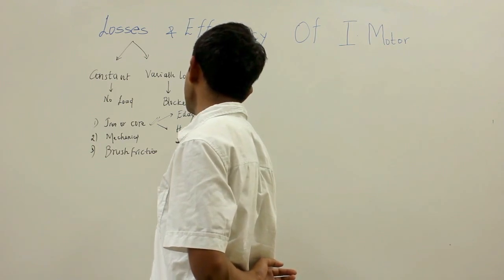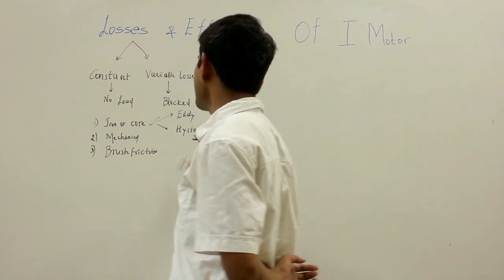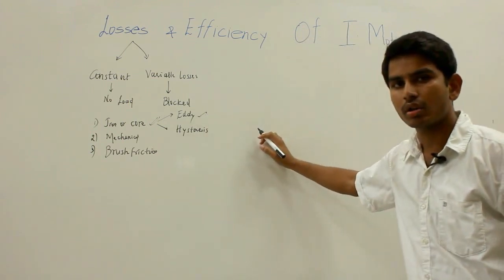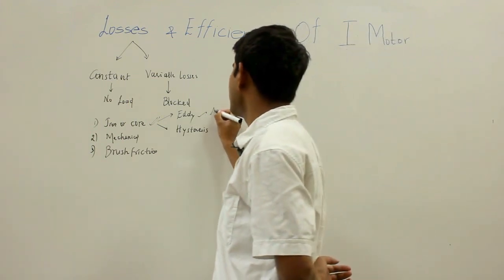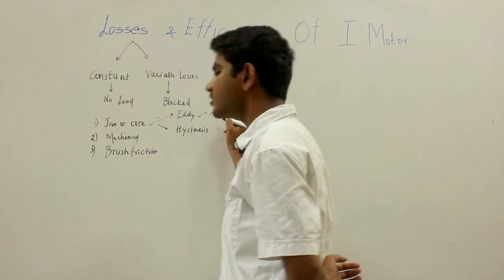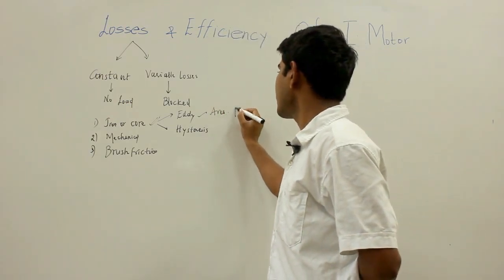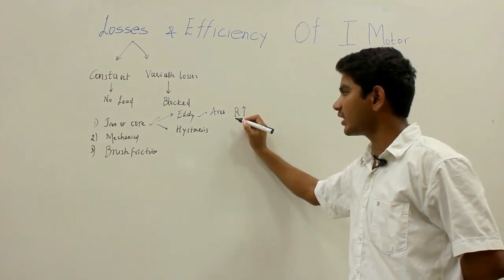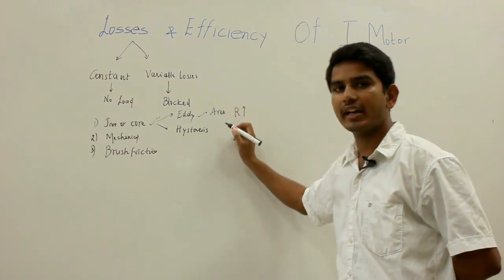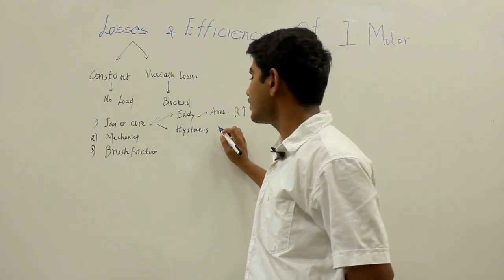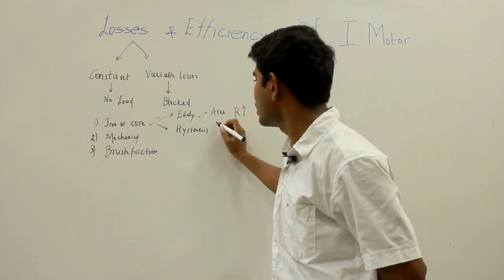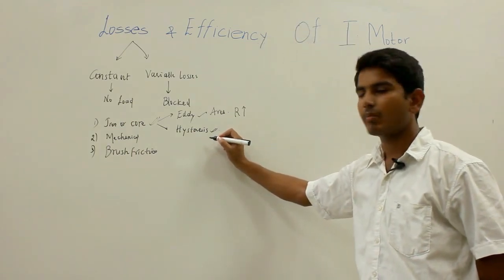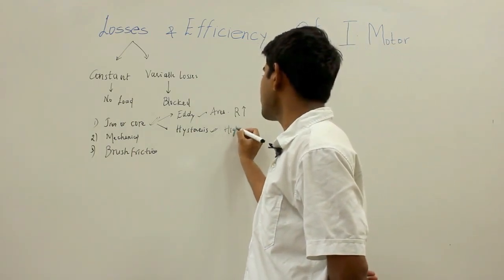Eddy current losses can be minimized by laminating the core. As you laminate the core, you decrease the area of the core. As the core area decreases, the resistance increases, and thereby the eddy current decreases — so eddy current losses can be effectively prevented by laminating the core. Hysteresis losses can be minimized by using high-grade silicon steel.